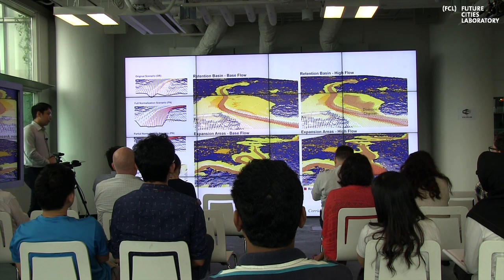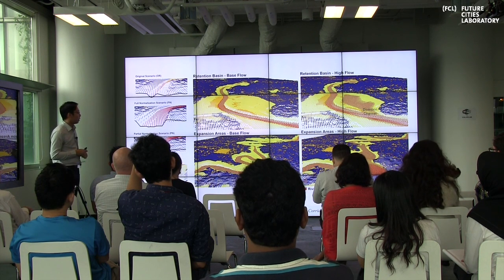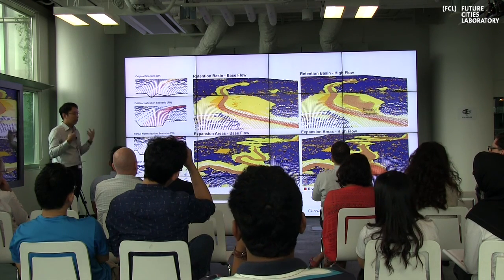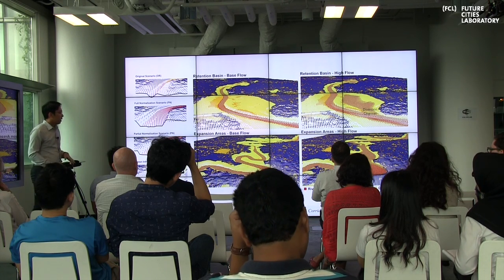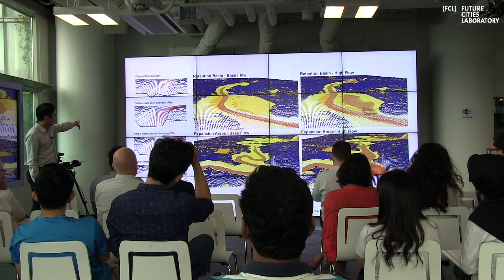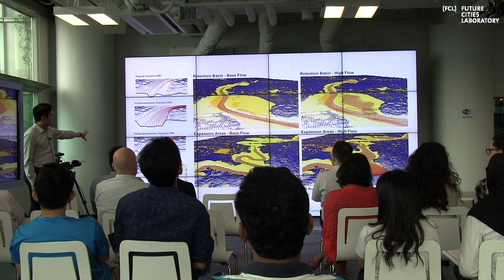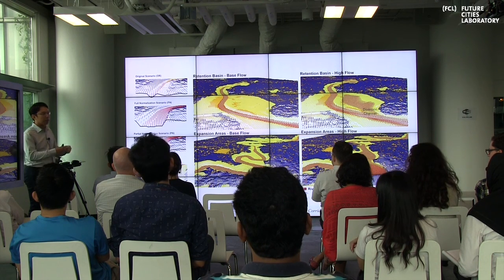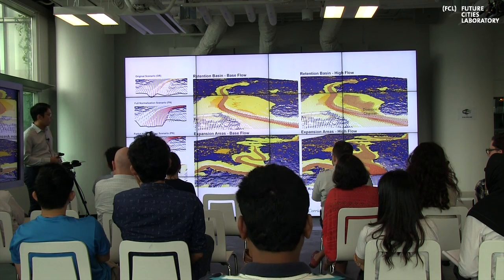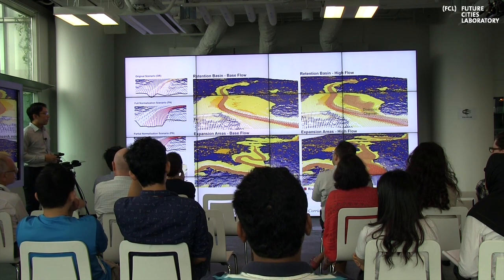Anyone who has worked on floods knows it's impossible to solve flooding at an isolated downstream point. So instead of a design-based approach, we went to a decision-based approach. We zoomed out and looked at a 40-kilometer stretch instead. We put in the most likely scenarios: the original scenario, a full normalization scenario with a canal running the entire 40 kilometers, a partial normalization, and our dream scenario — green infrastructure using retention basins and vegetation to slow the water down in an attempt to mitigate floods.